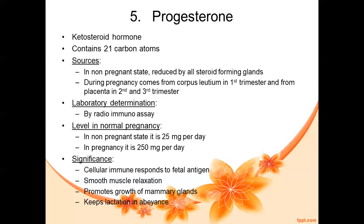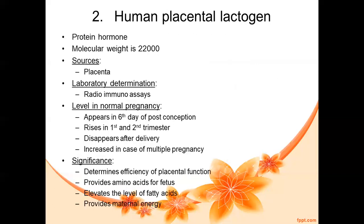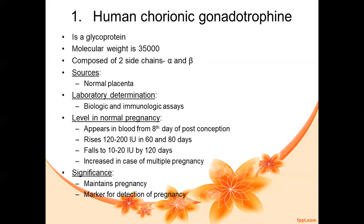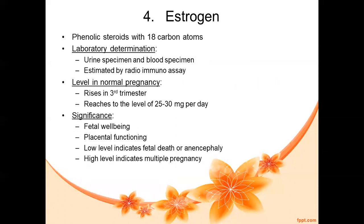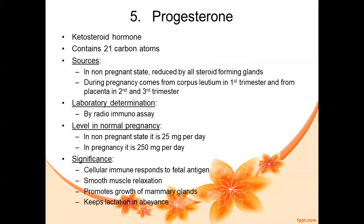Mainly, progesterone is required to maintain the pregnancy, promote growth of mammary glands, and support smooth muscle relaxation. So the five hormones influencing pregnancy are HCG, HPL, prolactin, estrogen, and progesterone.